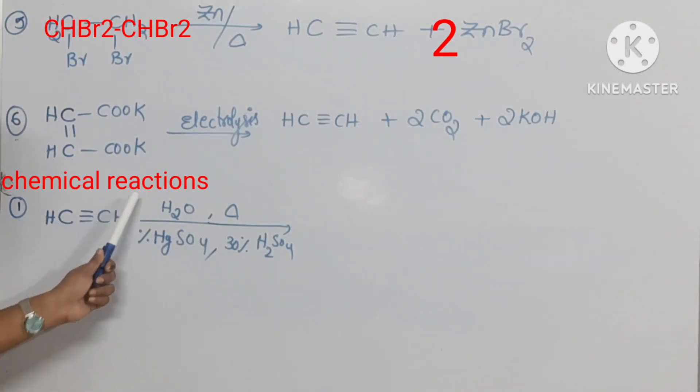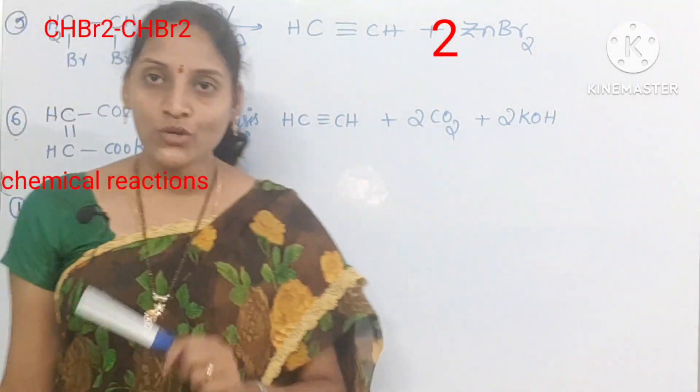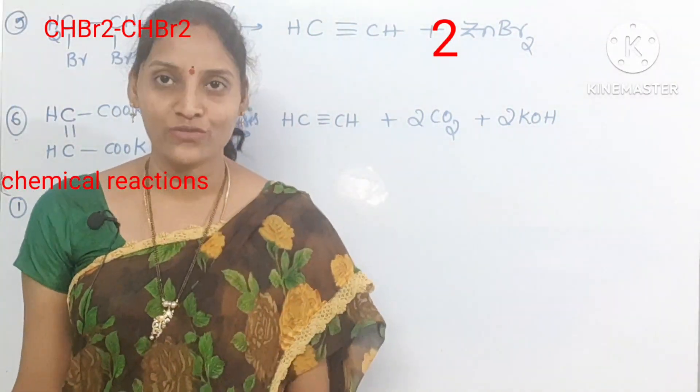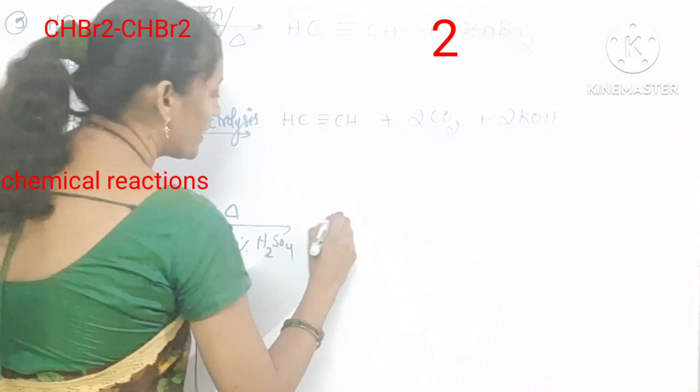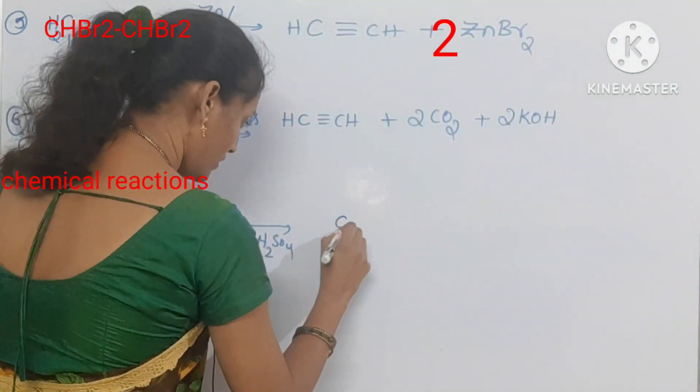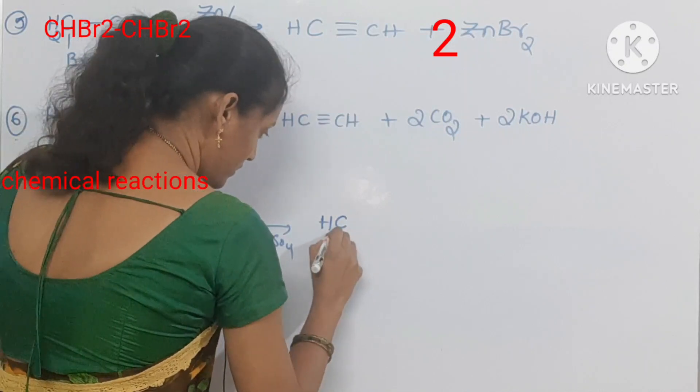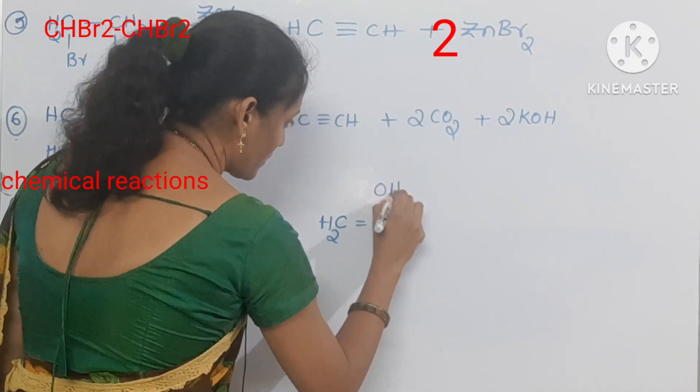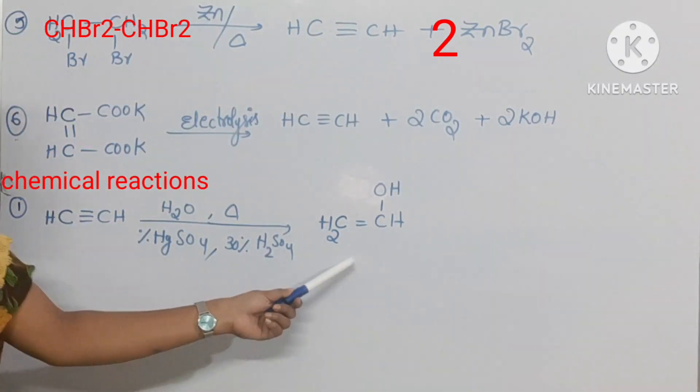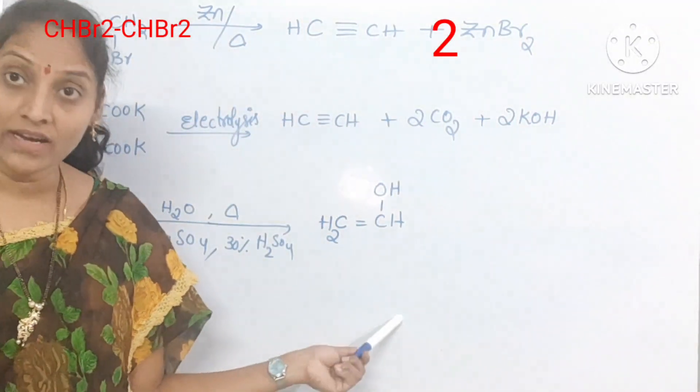Acetylene reacting with water in presence of mercuric sulfate and also sulfuric acid. Mercuric sulfate is 1%. You will get first of all CH2 double bond CHOH, vinyl alcohol. You will get vinyl alcohol.